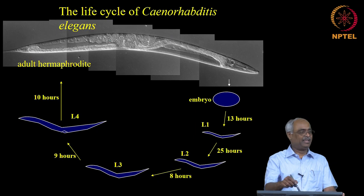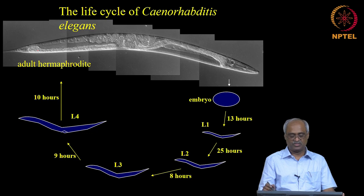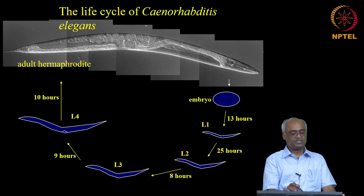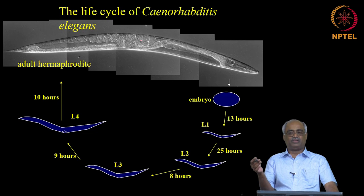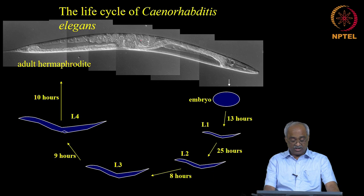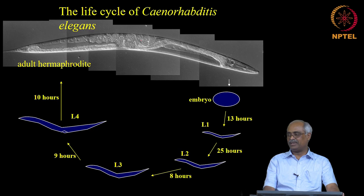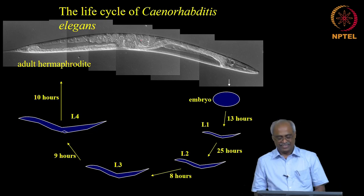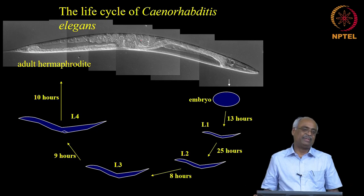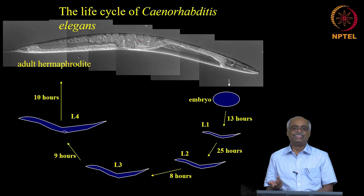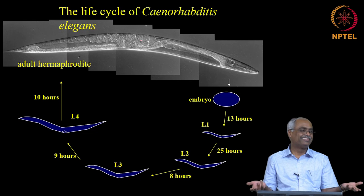C. elegans is about one millimeter long as an adult. An adult produces embryos that go through larval stages and become reproducing adults in less than three days. This short life cycle is advantageous because you get multiple generations quickly. In a PhD period, you could get thousands of generations from C. elegans — whereas in humans, F1 offspring would not even reach reproductive maturity within a PhD timeline.